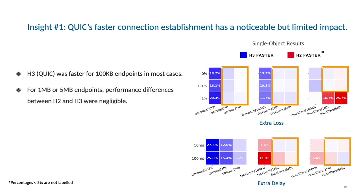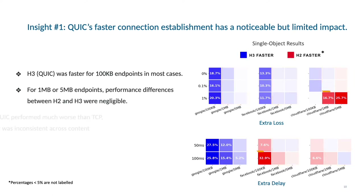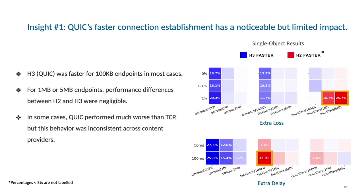However, this benefit was insignificant for 1MB and 5MB endpoints, as the differences between HTTP/2 and HTTP/3 were negligible in these cases. This demonstrates the limited scope of QUIC's faster connection establishment. In some cases, QUIC performed much worse than TCP, but this behavior was inconsistent across content providers, pointing to implementation-specific issues.